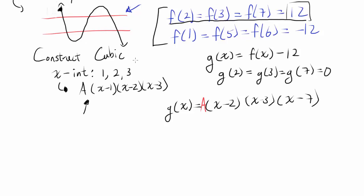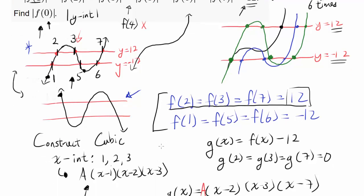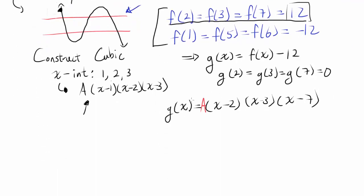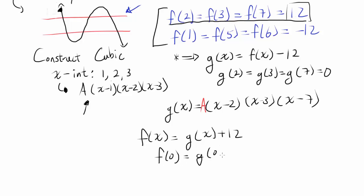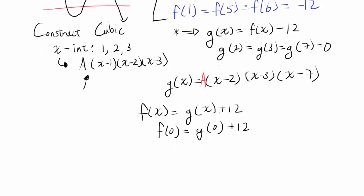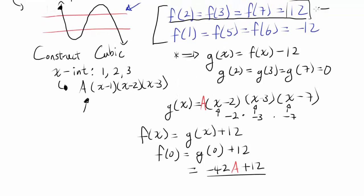Now, we want to find f(0). From g(x) = f(x) − 12, we get f(x) = g(x) + 12. So f(0) = g(0) + 12. And g(0) equals (−2)(−3)(−7) = negative 42. So f(0) = negative 42a + 12. We made g(x) using the first equation. Now let's make another cubic using the second equation.